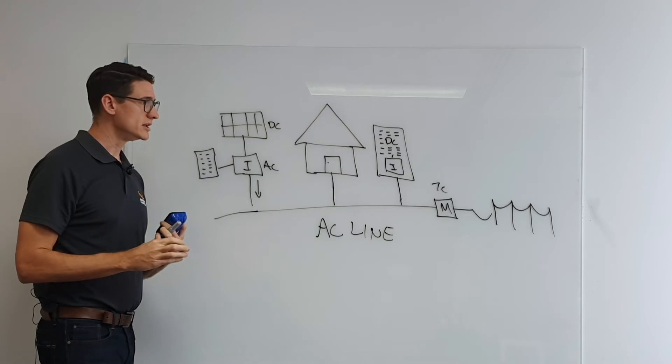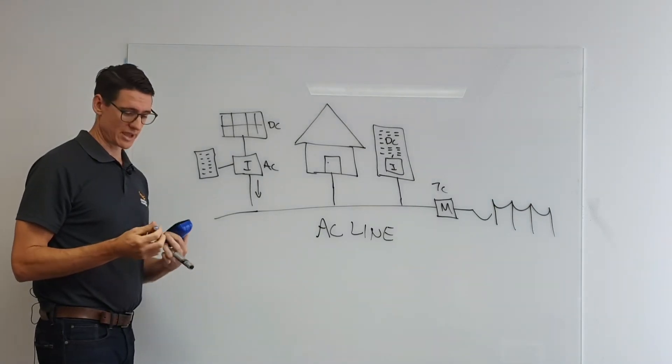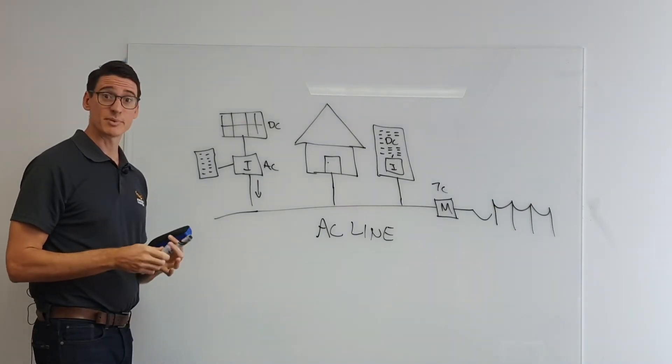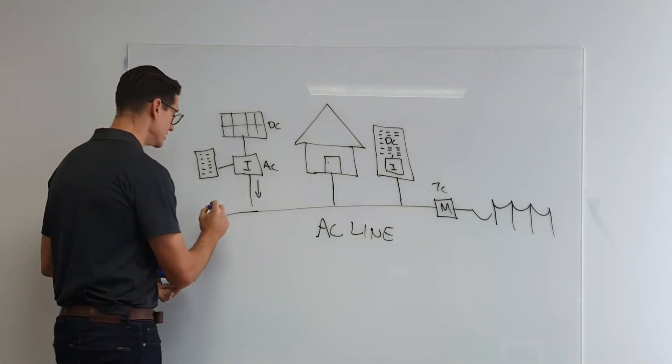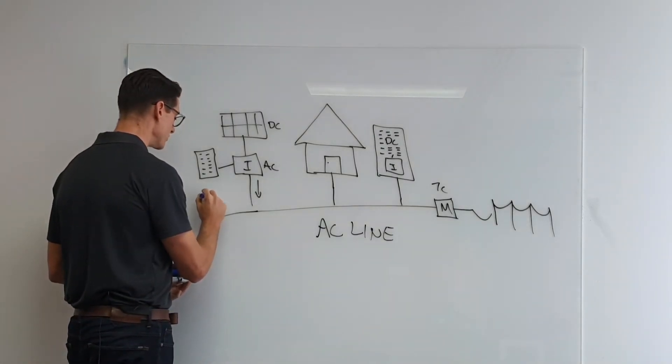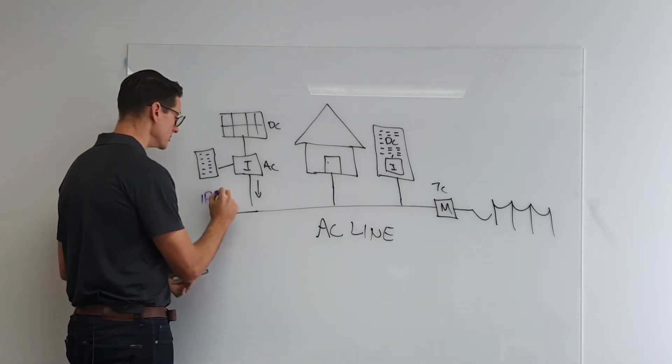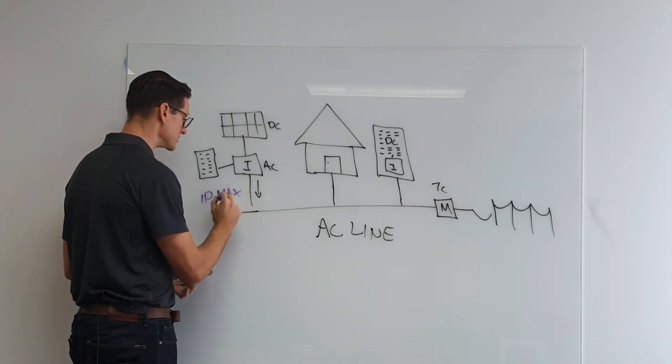So in Western Australia, we have a network operator, Western Power, has a rule that if you have a single phase home, your maximum allowable inverter capacity is five kilowatts.